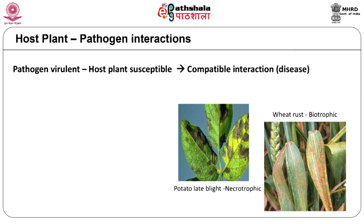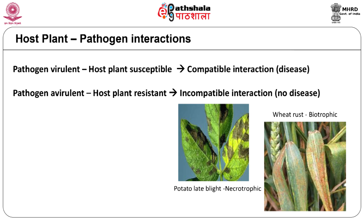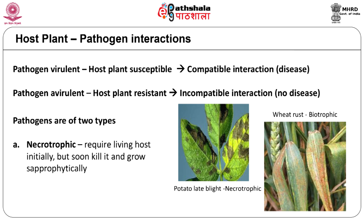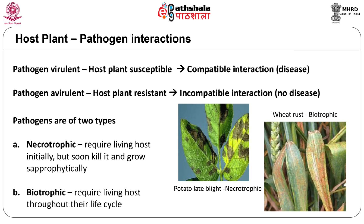Disease is caused when a virulent pathogen infects a susceptible plant, and this interaction between the host and pathogen is termed a compatible interaction. Disease resistance is seen where there is an incompatible interaction between the host plant and pathogen; in this case the host plant can recognize the pathogen and launch a defense response against it. The necrotrophic pathogens are brute killers — after infecting a plant they kill it and then grow saprophytically on dead plant tissue. The biotrophic pathogens, on the other hand, require a living host until they complete their life cycle.